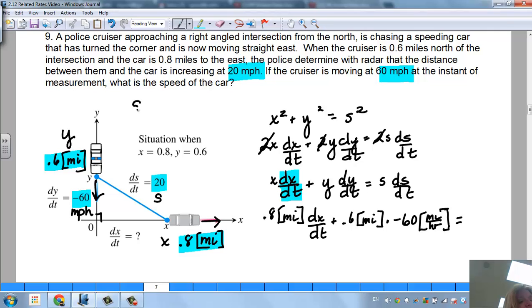So s is going to be, s² is going to equal 0.8² + 0.6². So s comes out to be 1 mile away. So I'm going to write s as 1 mile. So it's going to be 1 mile times ds/dt, which we know is 20 miles per hour.